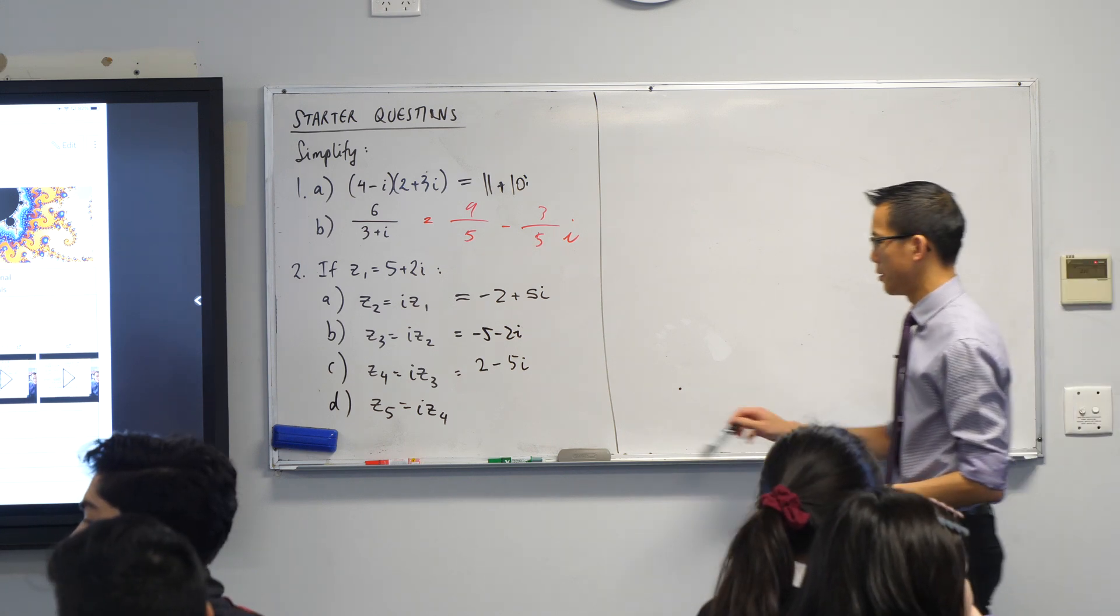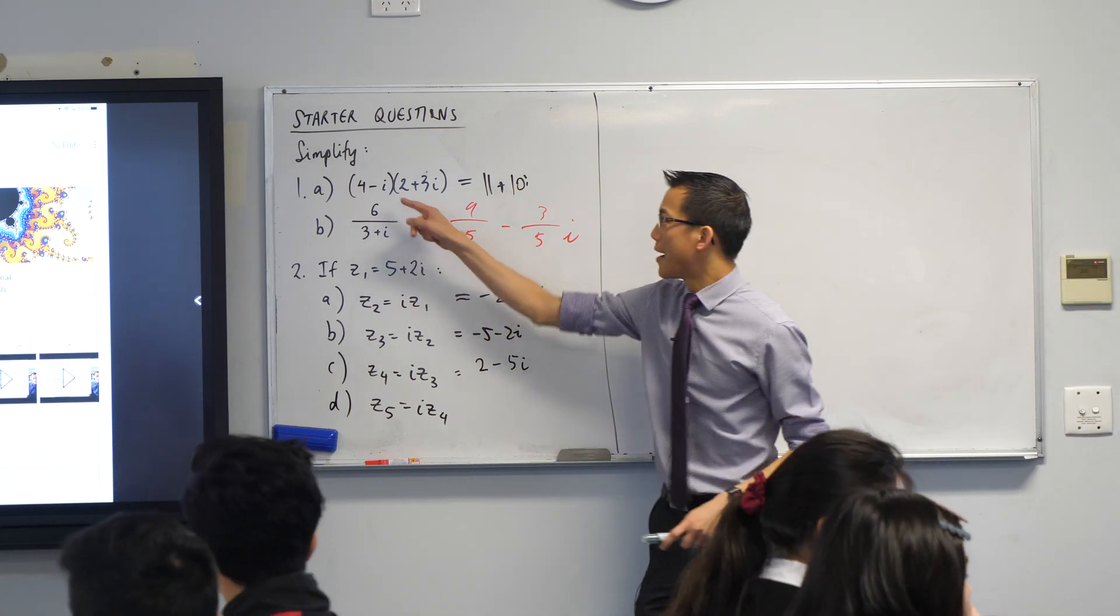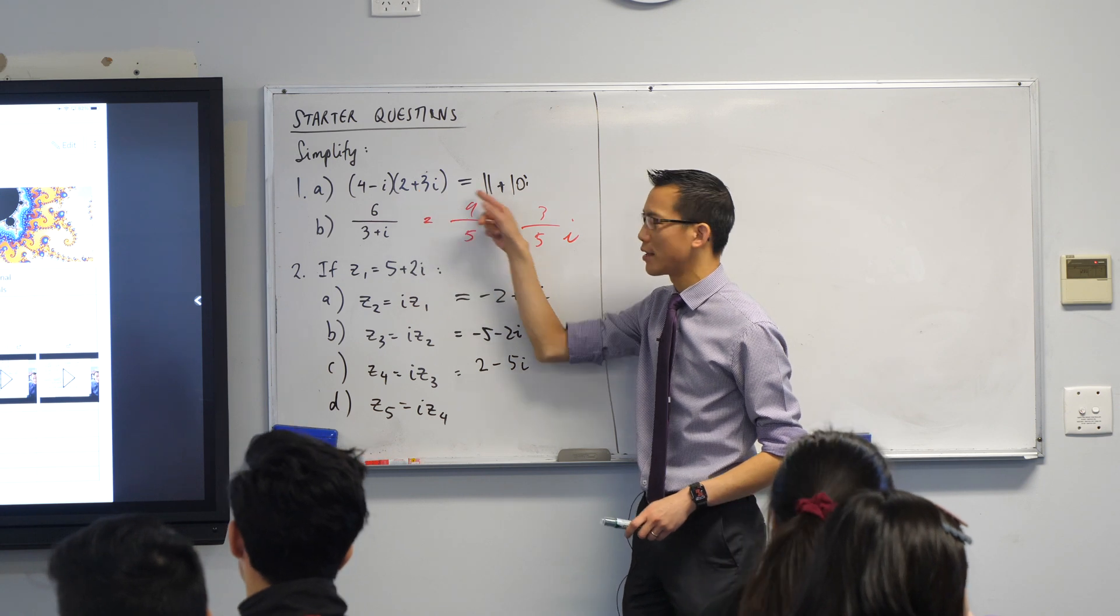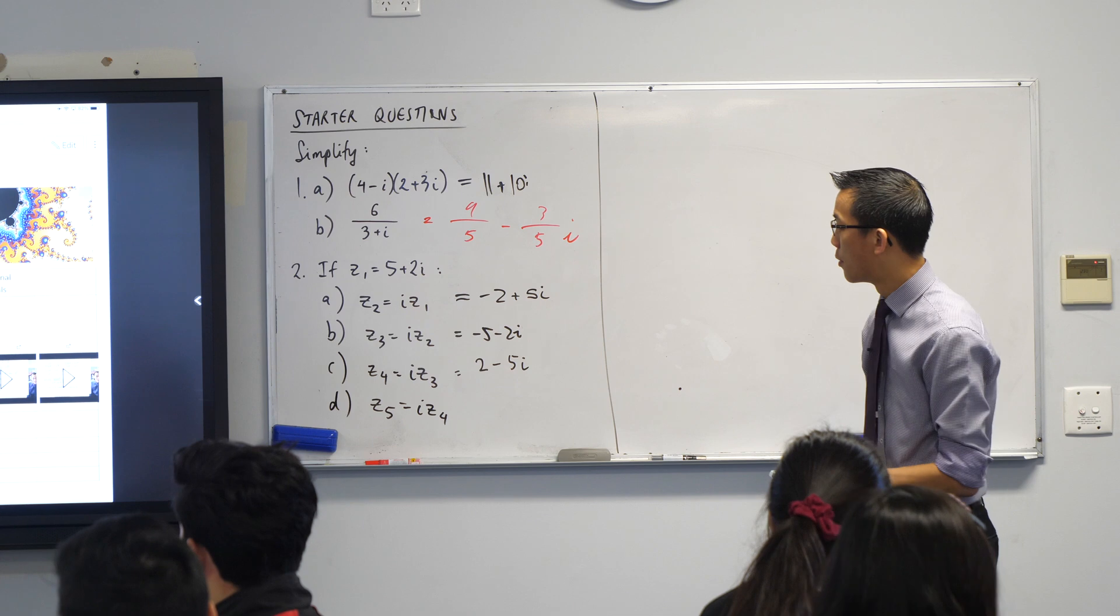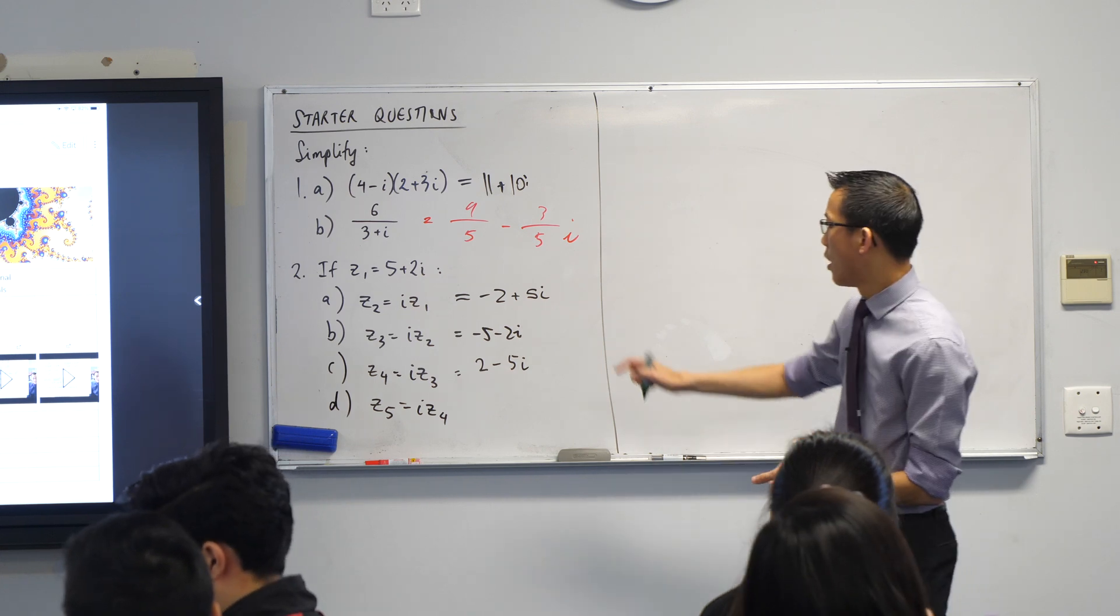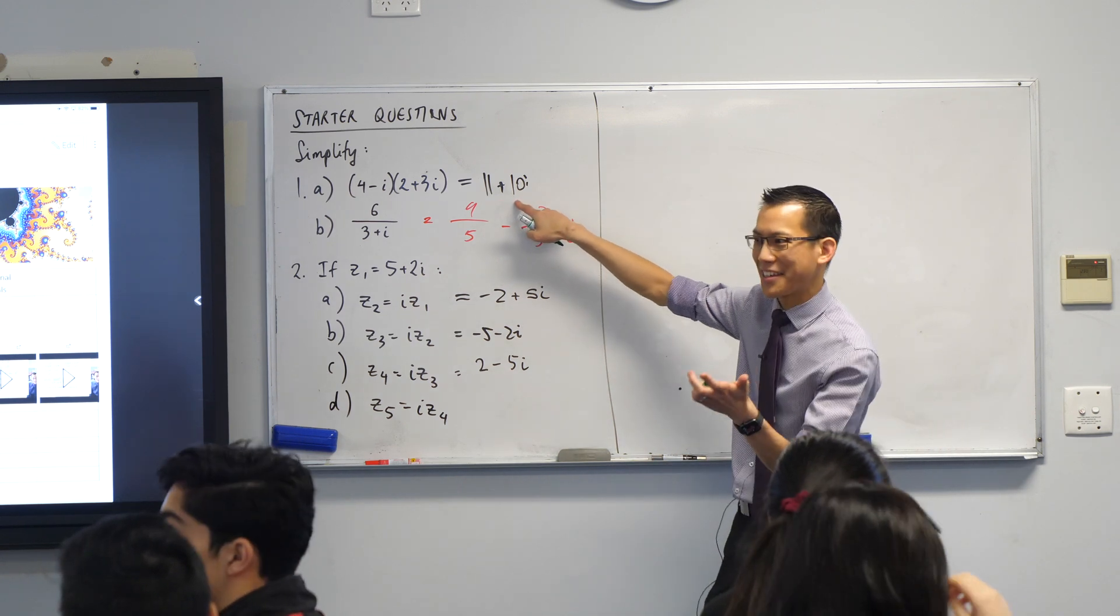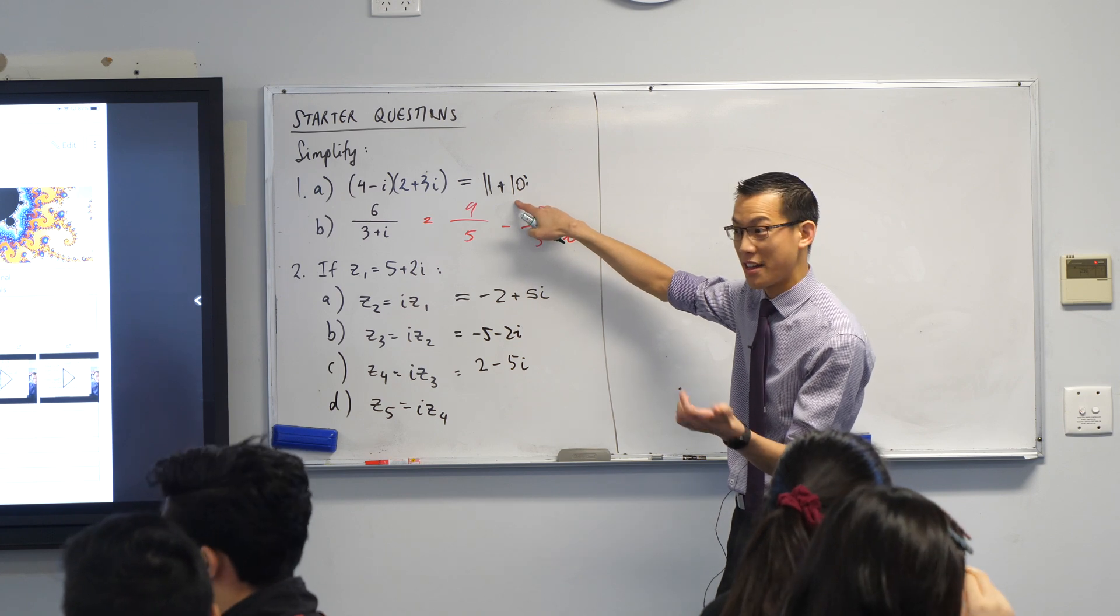Let's have a look at these answers. 4 minus i times 2 plus 3i. You've looked at multiplying complex numbers in very basic forms before. So this is pretty standard. We've got an answer here. Do we have agreement? Are you happy with 11 plus 10i?